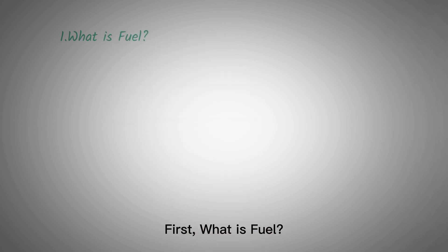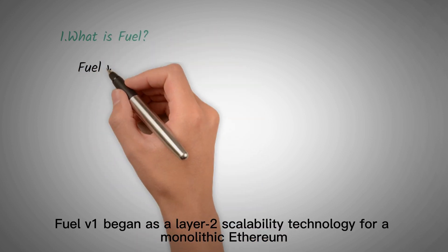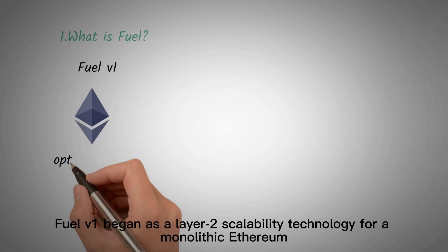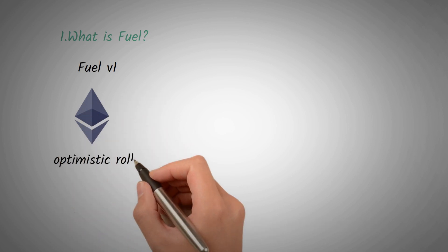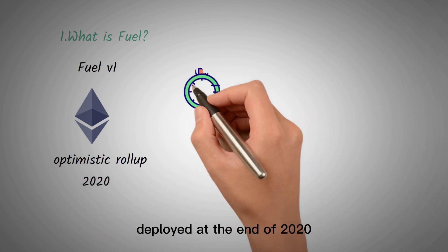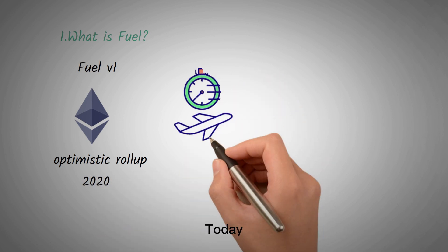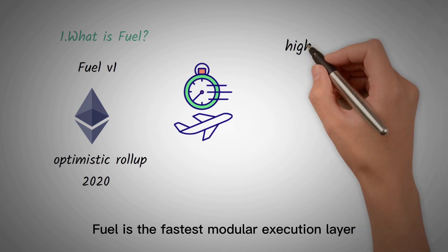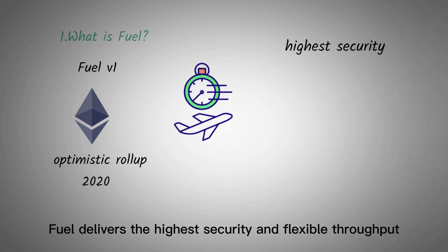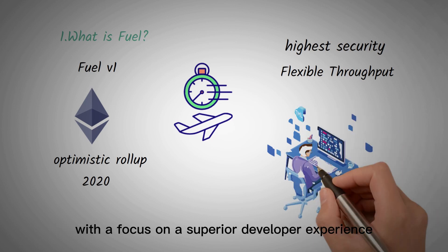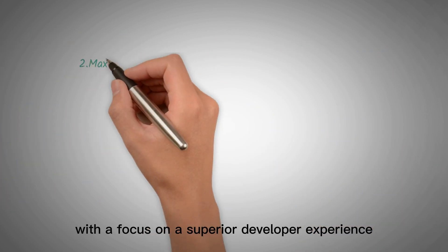First, what is Fuel? Fuel V1 began as a layer 2 scalability technology for a monolithic Ethereum. It was the first optimistic rollup on mainnet Ethereum, deployed at the end of 2020. Today, Fuel is the fastest modular execution layer, delivering the highest security and flexible throughput, with a focus on a superior developer experience.